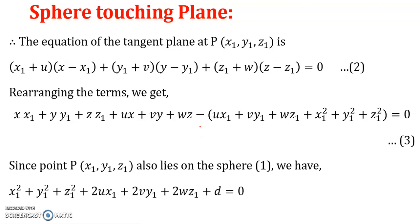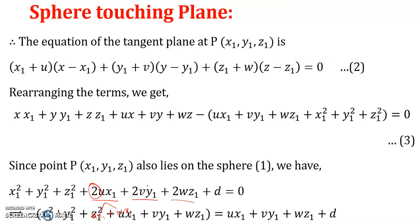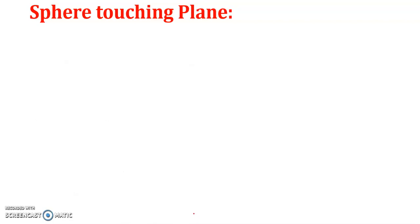Since point (x₁, y₁, z₁) lies on the sphere as well as on the plane, it satisfies the equation of the sphere. Therefore equation 1 becomes: x₁² + y₁² + z₁² + 2ux₁ + 2vy₁ + 2wz₁ + d = 0. We can rewrite 2ux₁ + 2vy₁ + 2wz₁ by splitting each term. Rearranging, we get: −(ux₁ + vy₁ + wz₁ + d) = x₁² + y₁² + z₁² + ux₁ + vy₁ + wz₁. We then substitute this result into equation number 3.